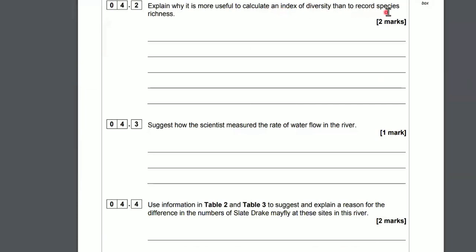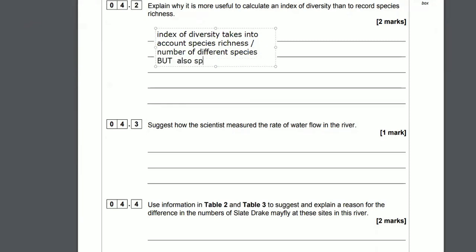Question 4.2: Explain why it's more useful to calculate an index of diversity than record species richness. Hopefully you know what species richness is. Species richness is the number of different individual species living in an area or habitat. An index of diversity doesn't just take into account the number of species, but it also takes into account the relative abundance of each species, something known as species evenness.